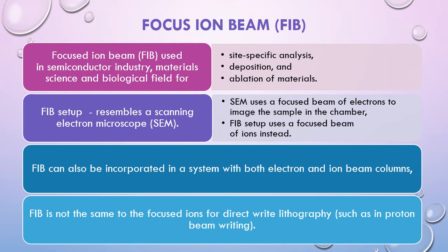FIB setup is a scientific instrument that resembles the SEM process. Sometimes it can be used together — SEM is usually used for a focused beam of electrons to image the sample, while FIB setup uses a focused beam of ions instead. FIB can also be incorporated in a system where both electron and ion beam columns are used together, allowing features to be investigated using either type of beam.